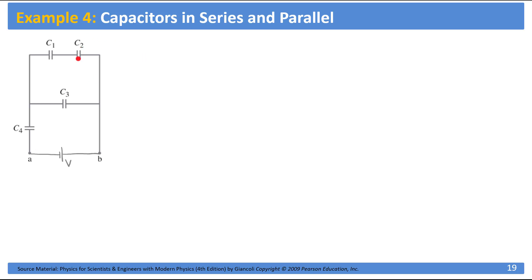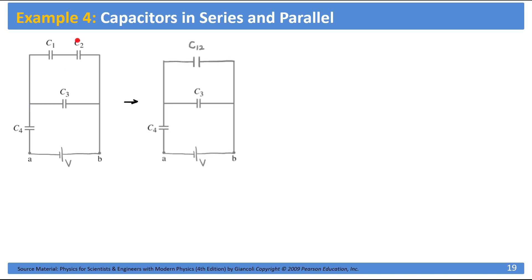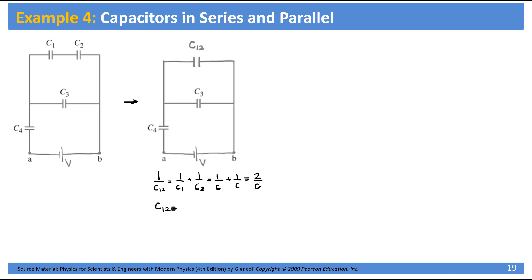So let's start with C1 and C2 and calculate their equivalent capacitance. Since they are in series, 1 over C12 equals 1 over C1 plus 1 over C2, which is 1 over C plus 1 over C. Remember, these had the same capacitance, giving us 2 over C. So C12 is equal to C over 2.